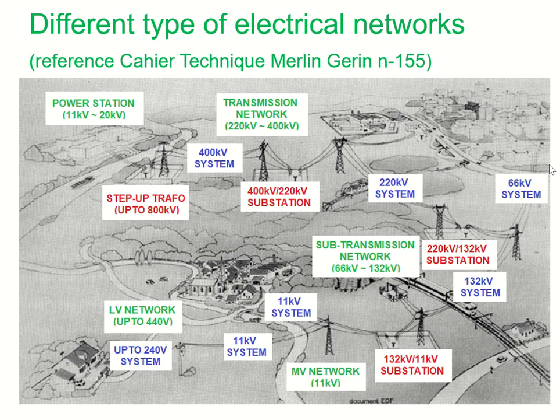This 66 kV or 132 kV can be directly transmitted to bulk consumers like the cement industry, steel industry, airports, or chemical plants, which have their own substations. These consumers use huge amounts of power and reduce the power further at their own sites.